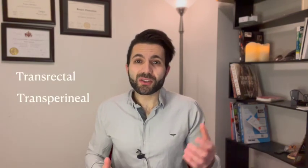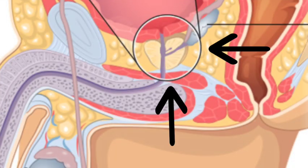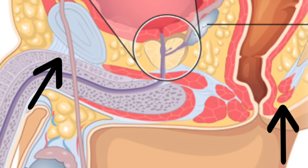There are two approaches: either transrectal or transperineal. Transrectal involves inserting the needle from the rectum to the prostate. Transperineal involves inserting through the perineal space — the area between the pubic symphysis and the tailbone. Usually urologists use the transperineal approach. Talk to your urologist about the best approach for your case.